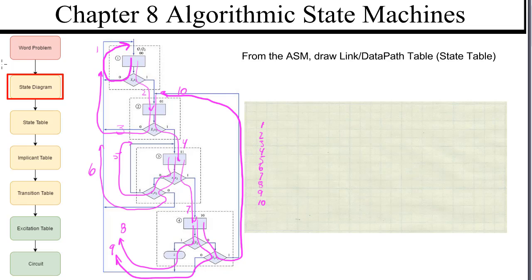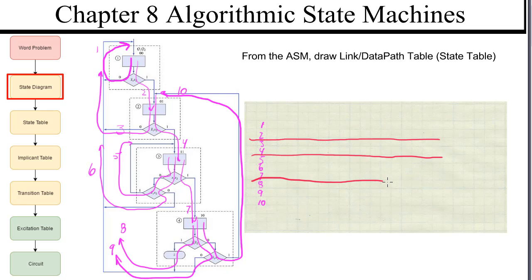Now let's separate them into states. So one and two come from one state. And our states are one. Our input variables are x1 and x2. Every one of these places is x1 and x2. So we have a pattern here.